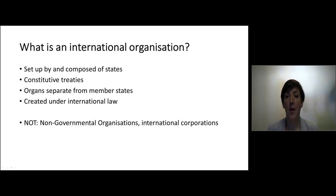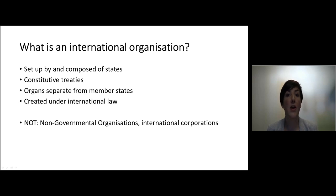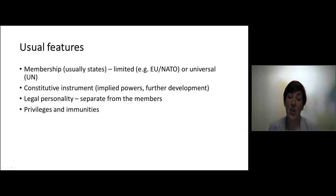International organizations have organs that are separate from the member states, and they are created under international law. This distinguishes them from non-governmental organizations or NGOs, which are private organizations, and from international corporations, which are private companies that operate across borders. The usual features of international organizations are that they are open for membership and the members are usually states, although membership can be limited — for example the EU or NATO have a certain regional limit — or universal, like the UN.